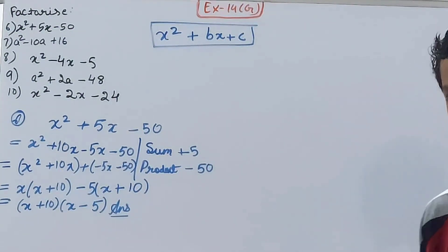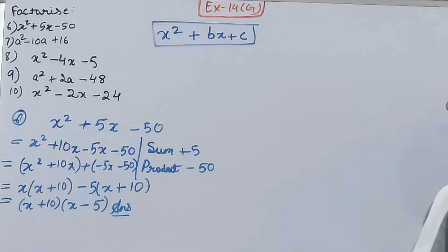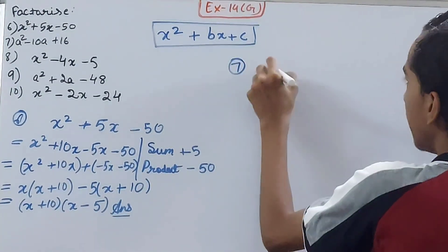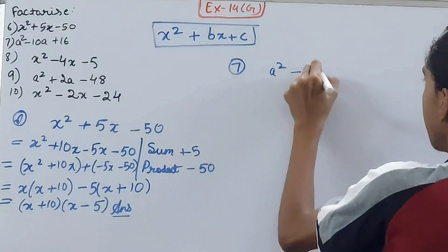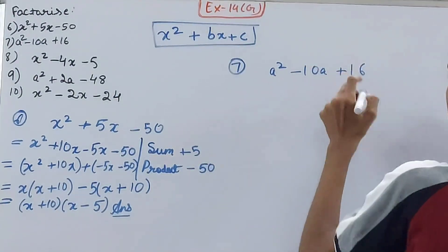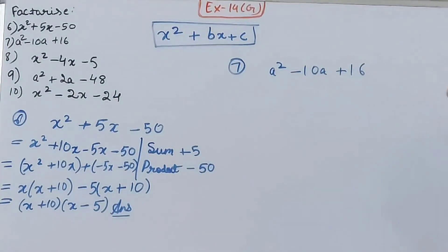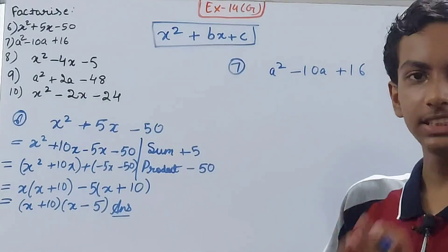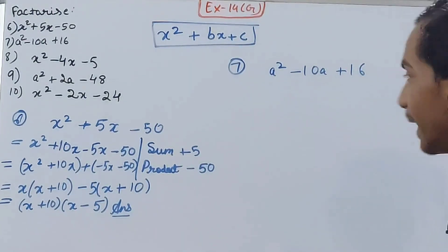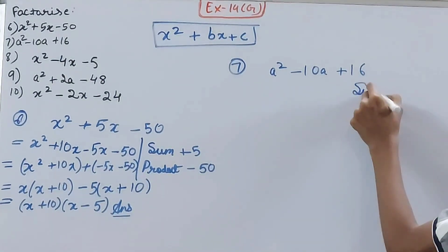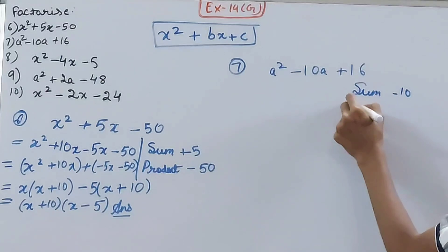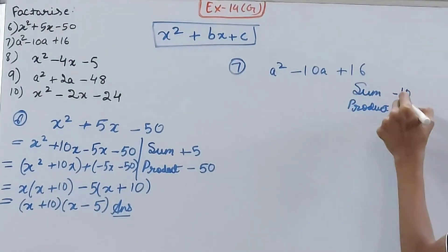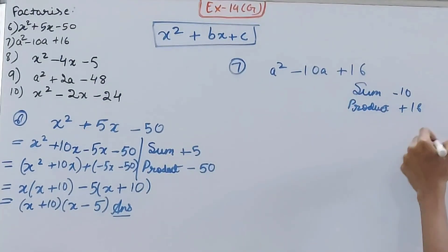See the seventh question: a squared minus 10a plus 16. Look at the middle term minus 10a — you have to split this term in such a way that the sum is minus 10 and the product is plus 16.